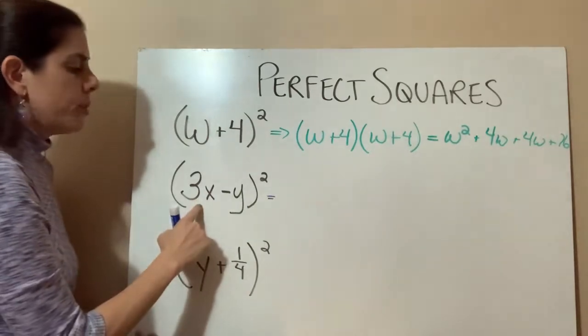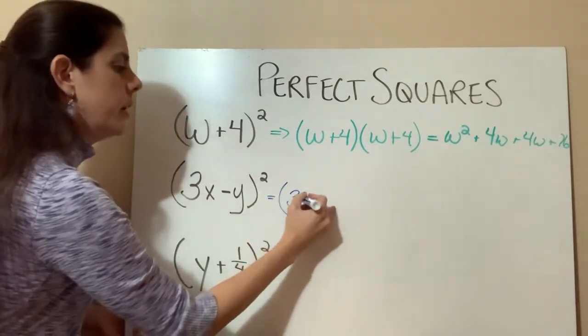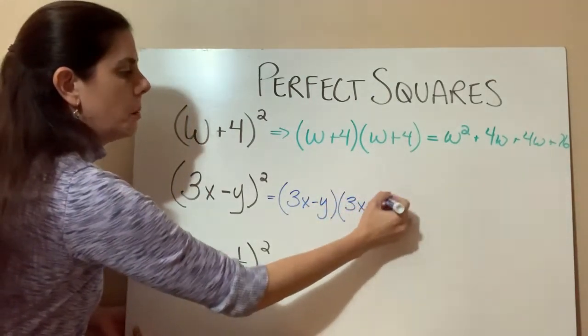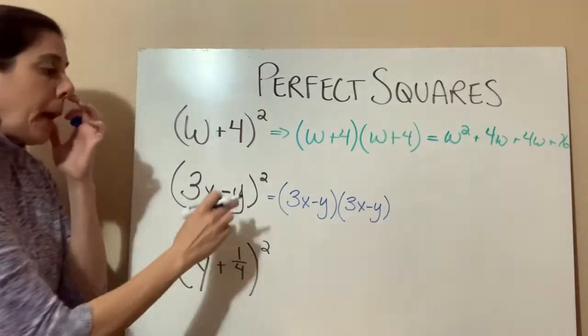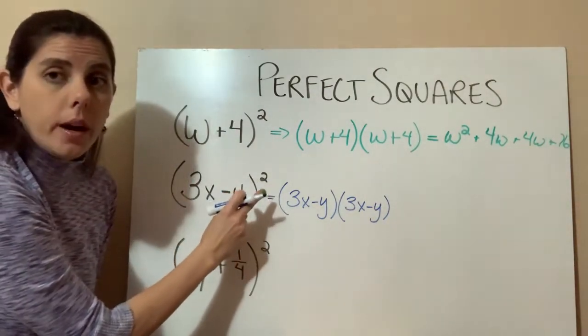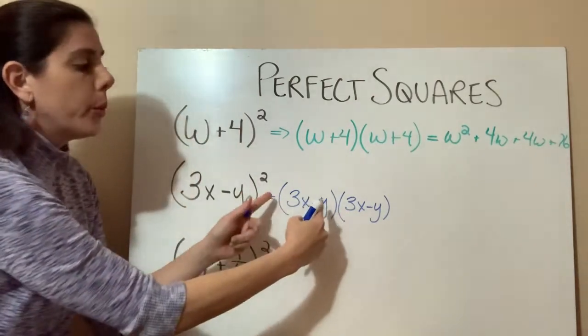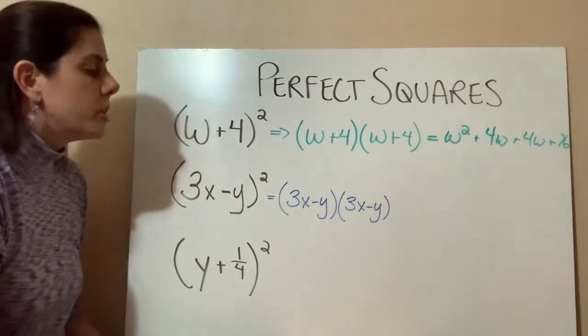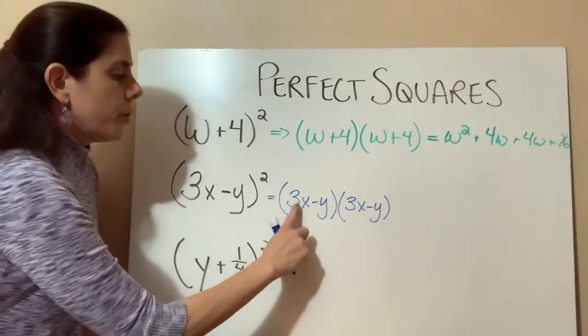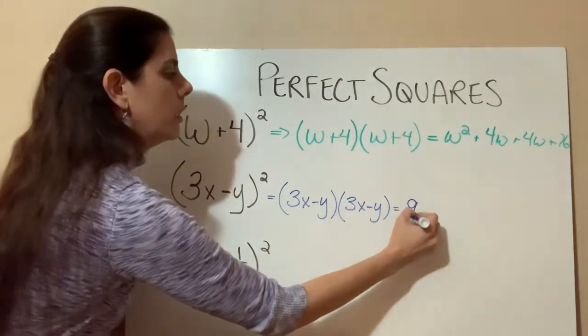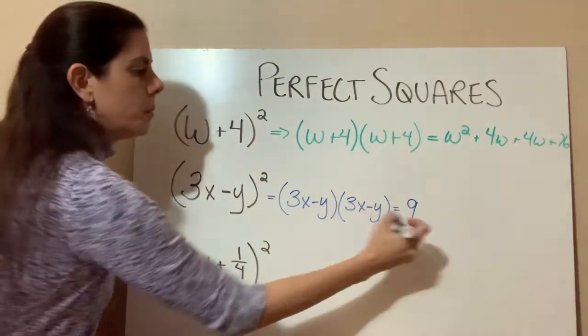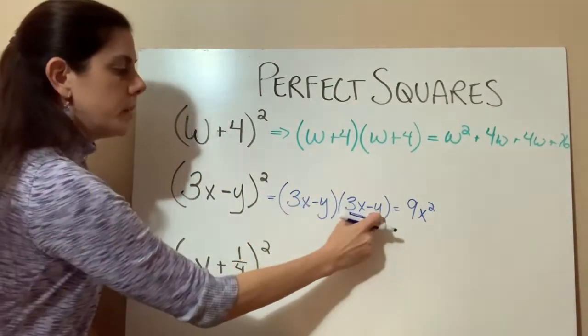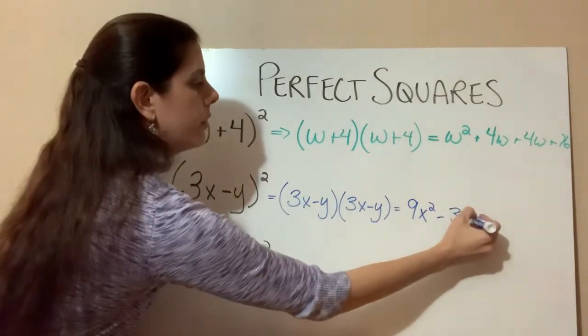So on this one, again, we have 3x minus y in our set of parentheses. So 3x minus y times 3x minus y. So again, whenever we have a binomial that has a square outside that has an exponent of 2, we're rewriting that binomial two times. And then we're going to use our distribution in order to multiply those binomials together. So 3 times 3 is 9, x times x is x squared. And then we have the 3x times the negative y, which would be a negative 3xy.